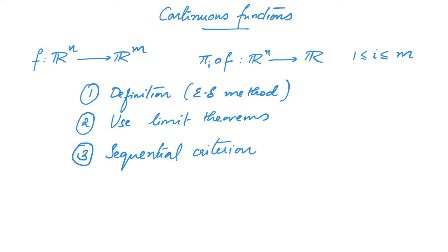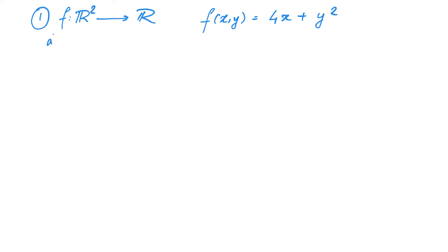In this video we will look at three functions. The first two functions are polynomials, and for polynomials it's not too difficult to check continuity using the definition. Thus we will prove the continuity of these two functions using all three techniques. The third function, which is not a polynomial, will be proved to be continuous only using the second and third method. The first function f from R² to R is defined as f(x,y) = 4x + y².